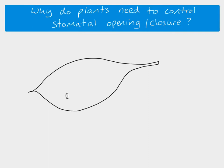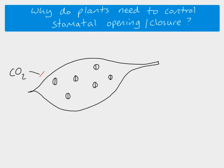So here's a leaf and here are some stomata — actually these are the guard cells. So here we've got two guard cells. At the moment these guard cells are in a position so the stomata is closed, so there's no opening there into the inside of the leaf, and because these stomata are closed that means that carbon dioxide is not able to enter the leaf.